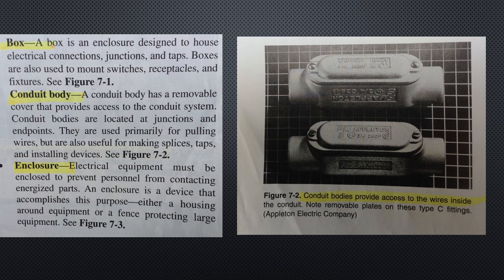The conduit body: the conduit body has a removable cover that provides access to the conduit system. Conduit bodies are located at junctions and endpoints. They're used primarily for pulling wires, but are also useful for making splices, taps, and installing devices. You can see that on the right side of the screen, Figure 7-2.